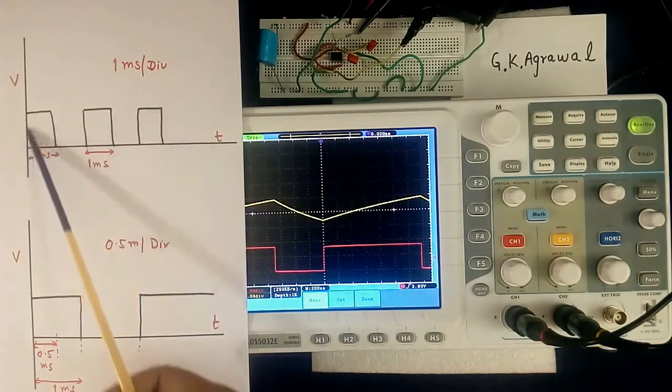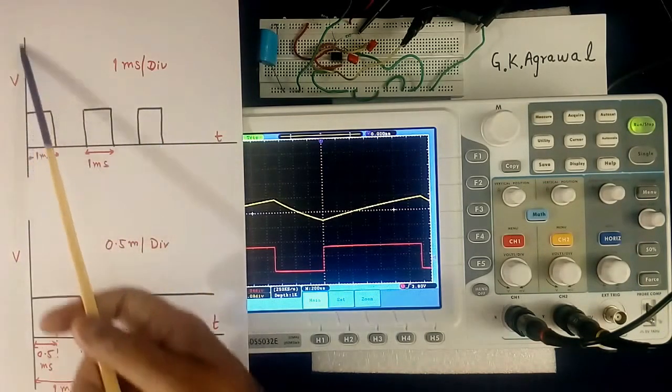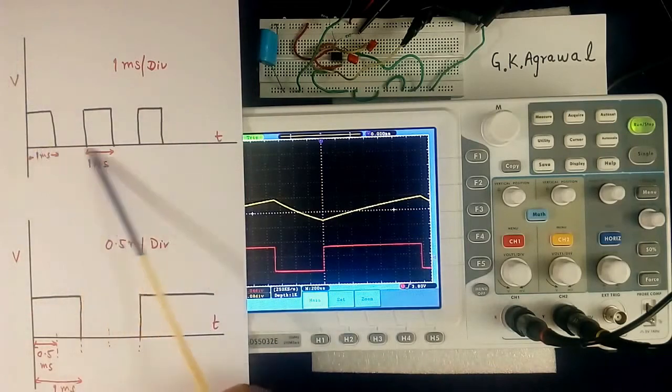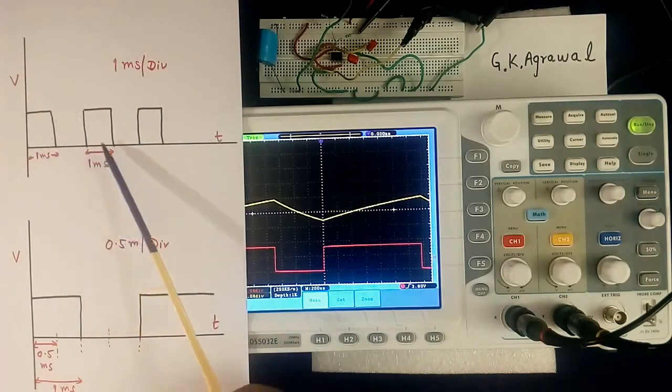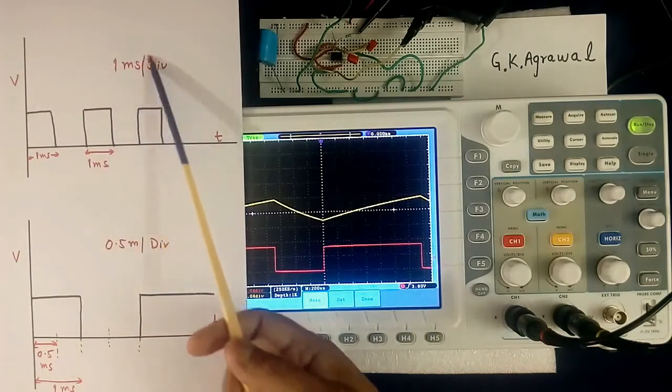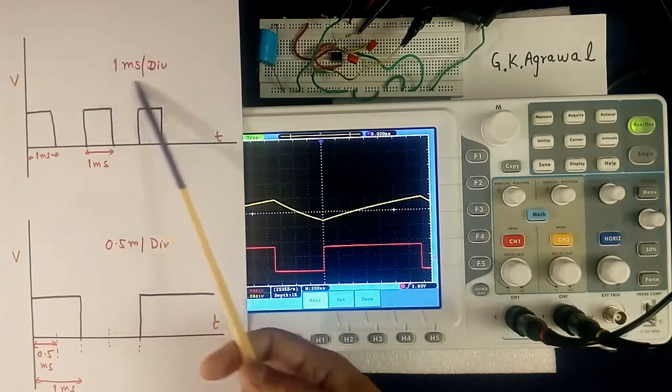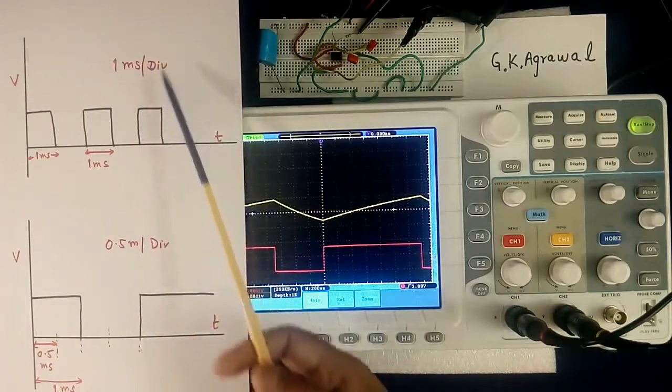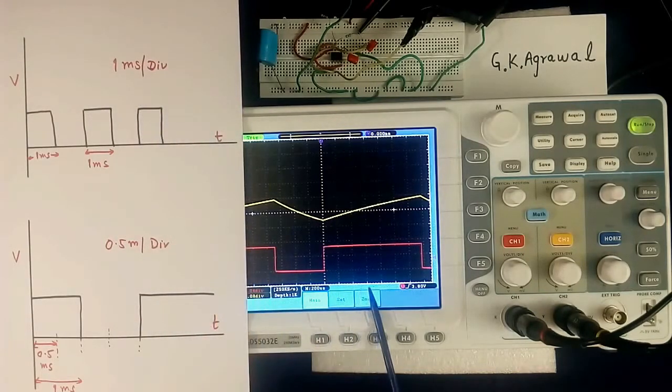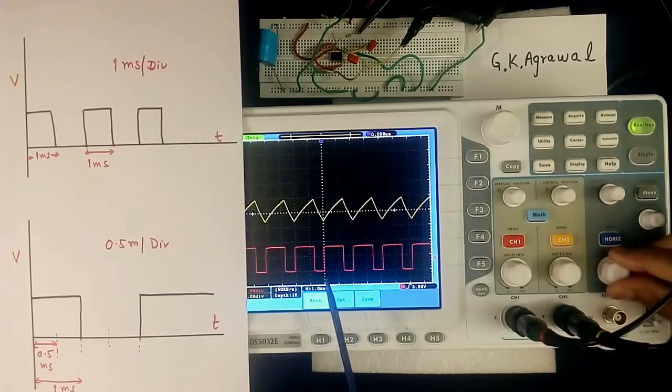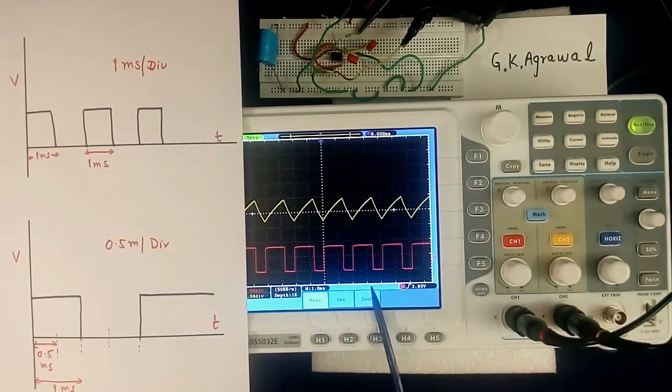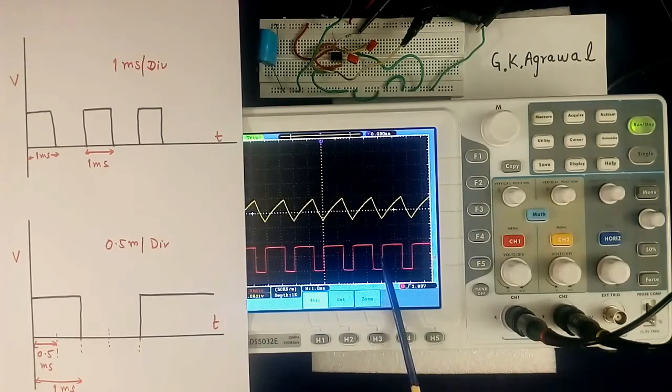Now suppose there is a waveshape. Then this will show voltage, this will show time. And there is a square wave. And we have set value 1 ms per division. 1 ms per division means what? One division means from here to here. So from this point to this point is 1 ms. So this width is a little less than 1 ms.